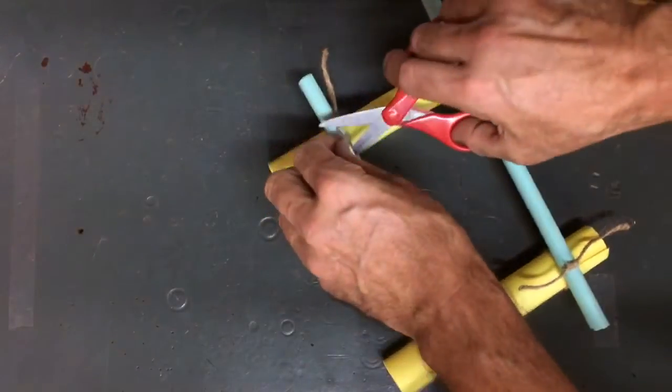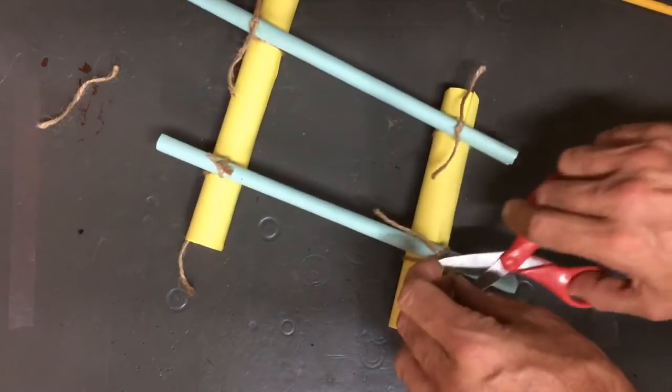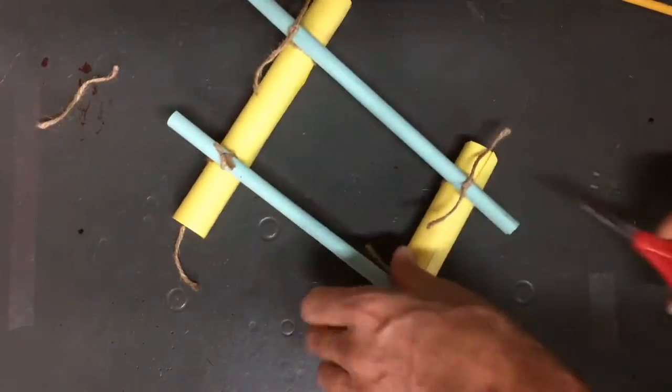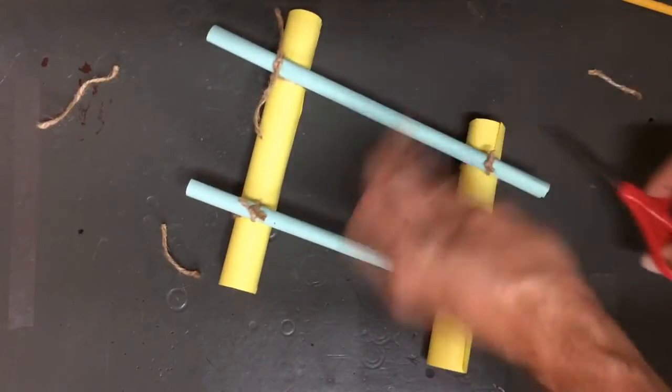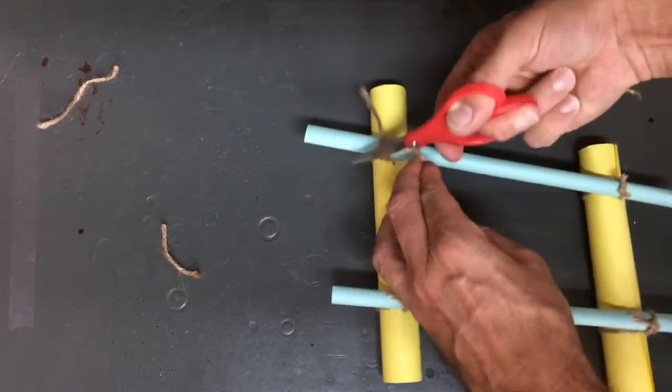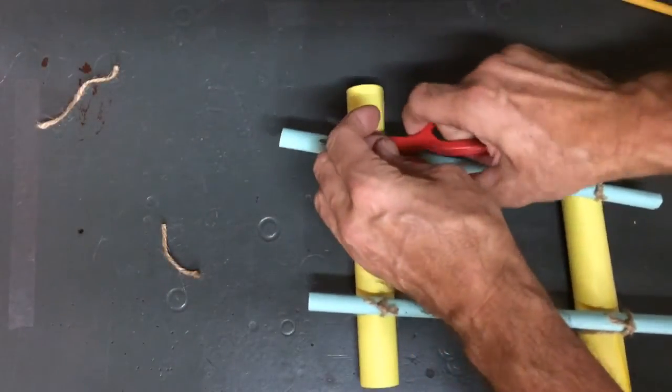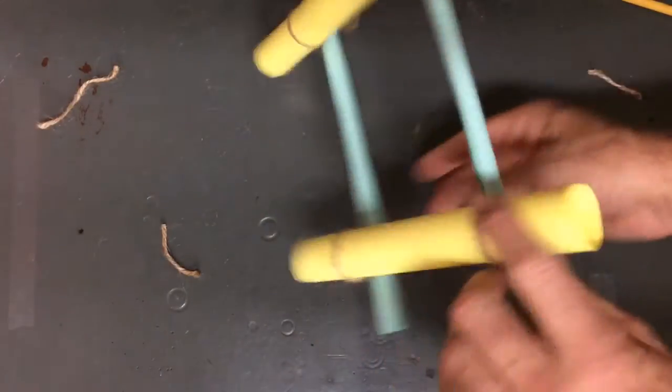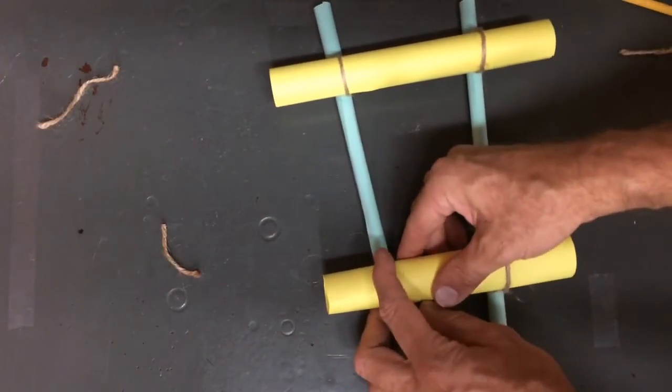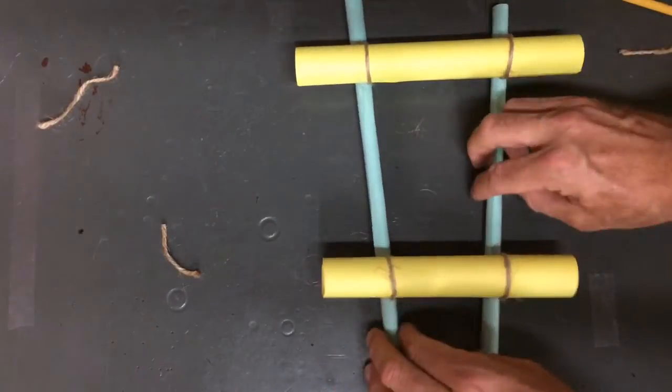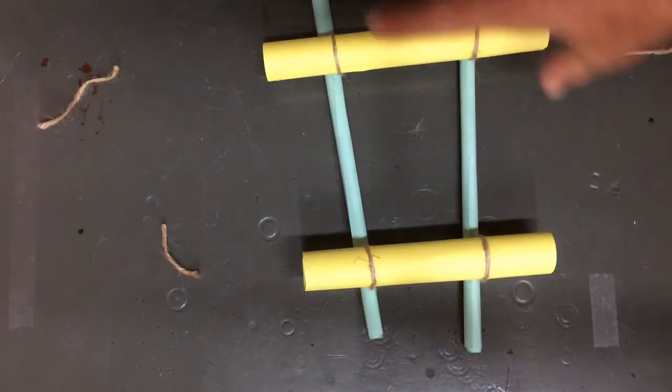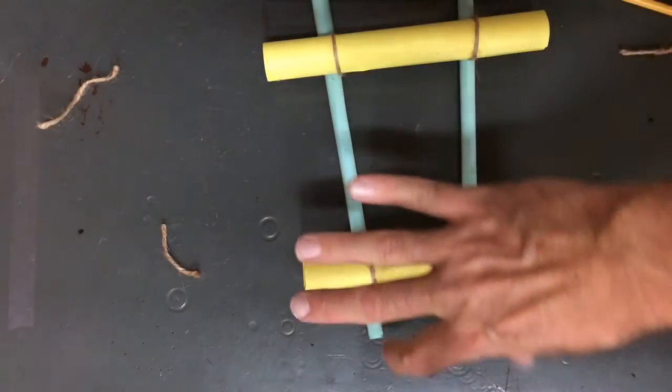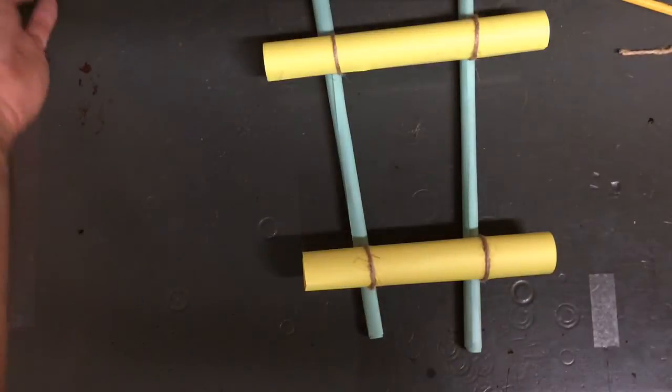So I'm going to just trim these pieces of string. This kind of looks like a ladder to make this symmetrical. So you see that going from the longest tube to the shortest tube, you're going to get this kind of a V arrangement of those green paper rods that you've created.